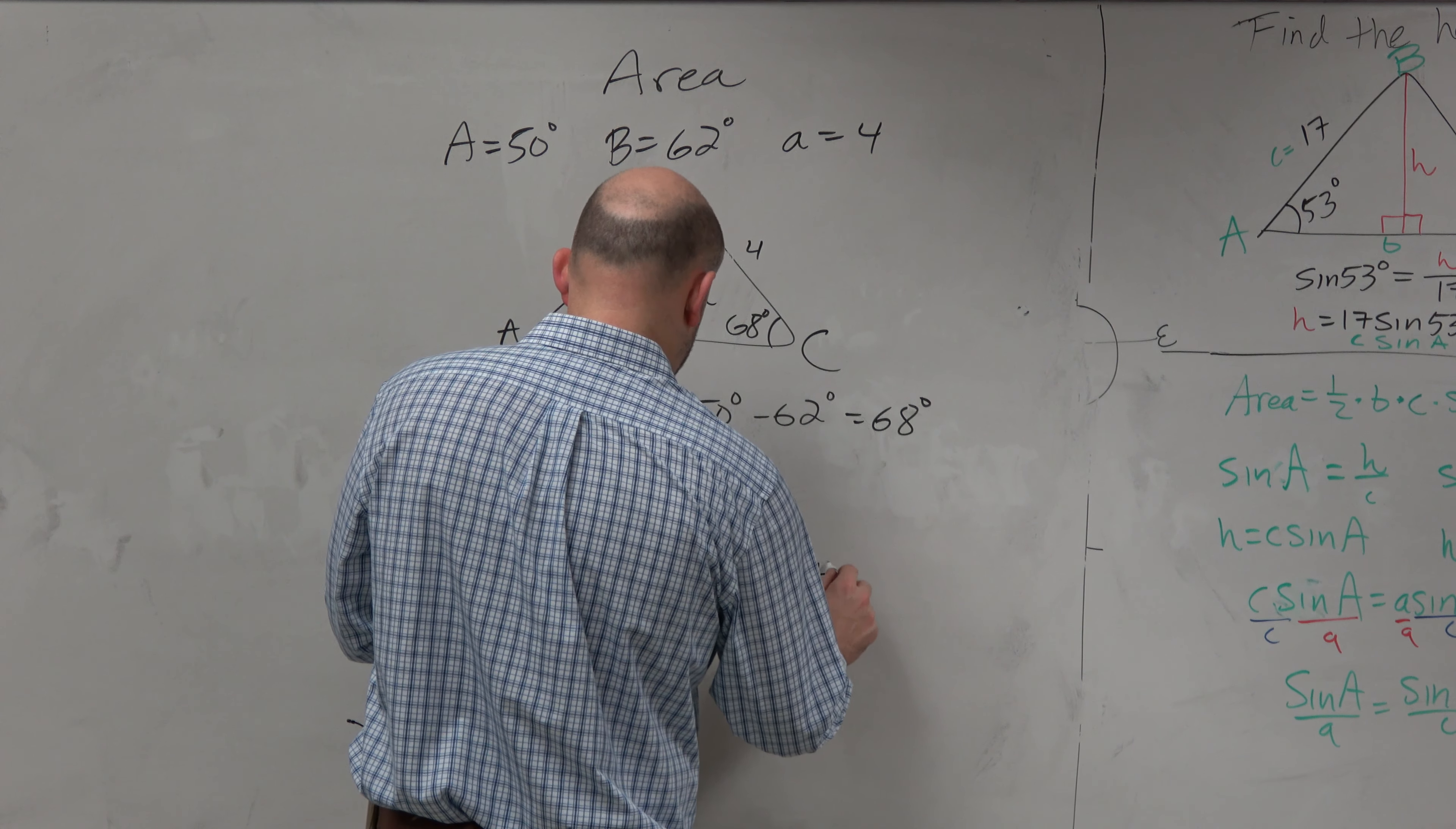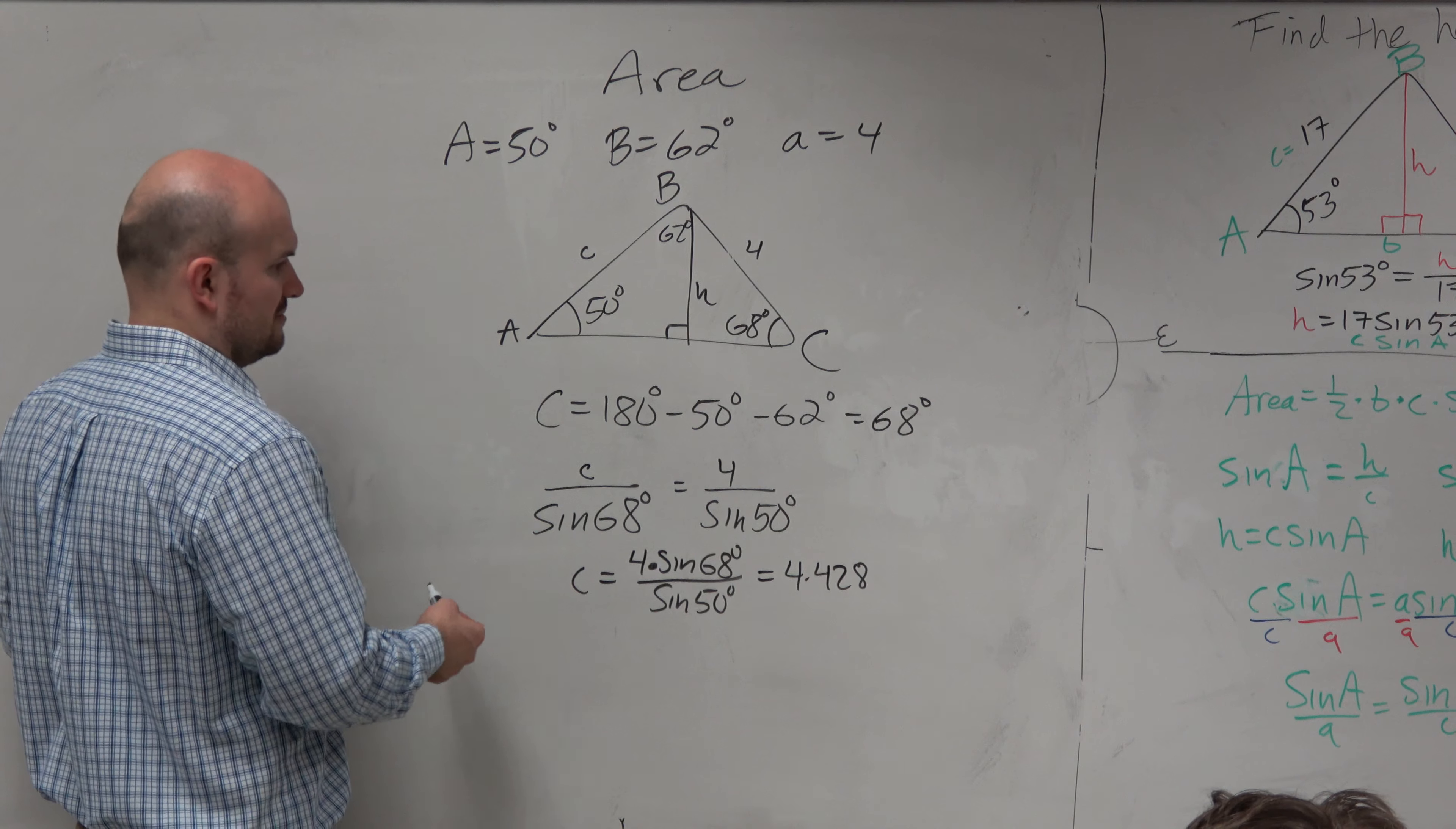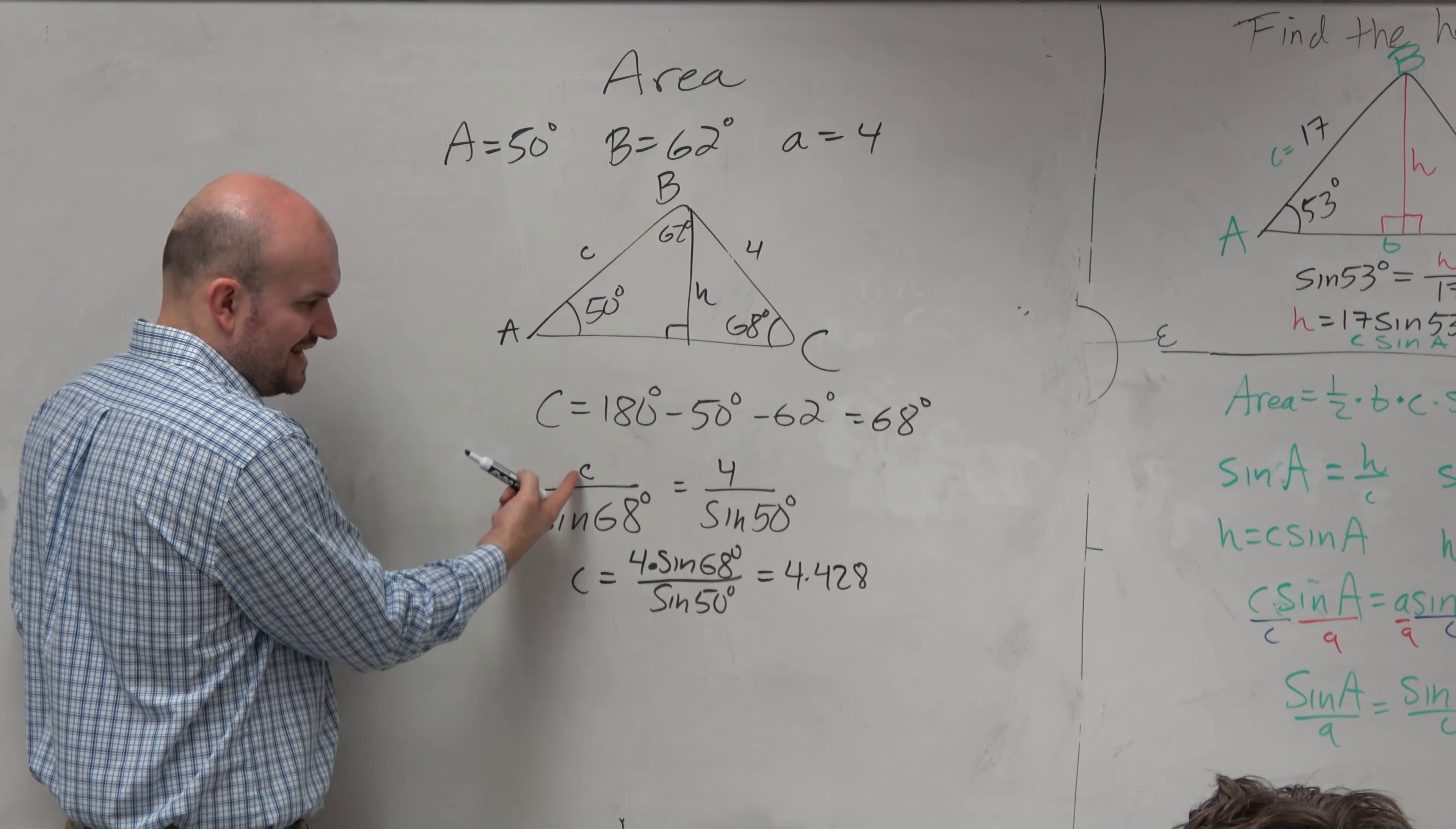And I get 4.428. Second? Yes? Could you cross multiply as well? I mean, you could, but it's more work. Why would you want to, like? Cross multiplying is the same thing. You still got to solve for C. So I mean, it's just easier to say, well, I've got to undo dividing by sine, so just multiply by sine of both sides.